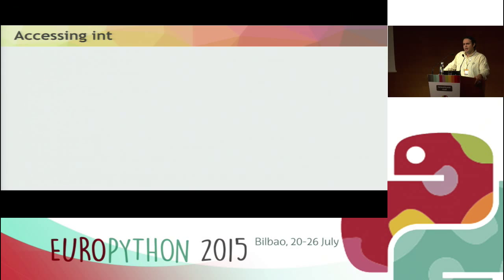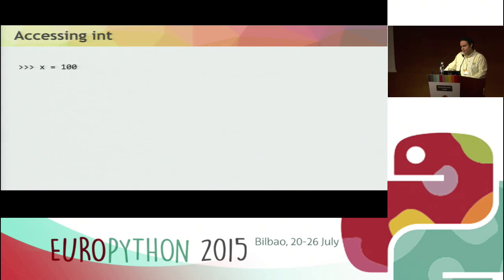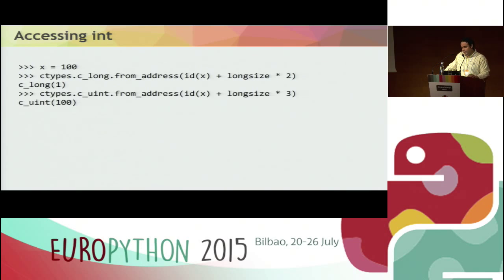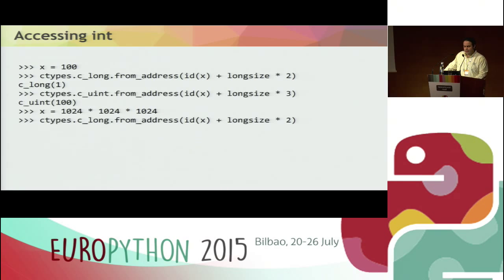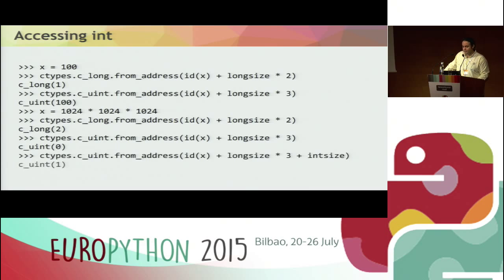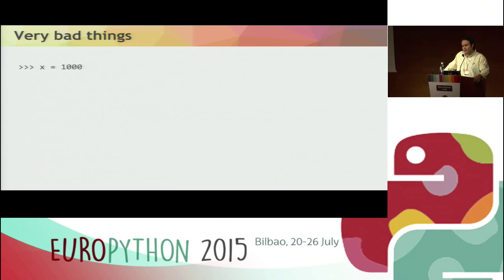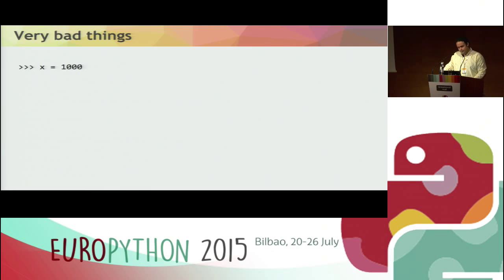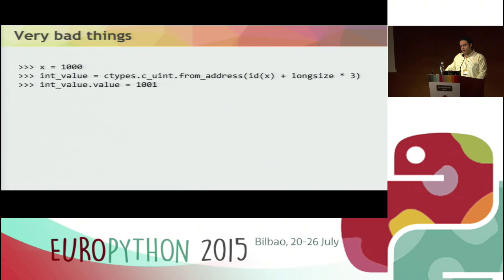I can access the structure of an int with ctypes. I set X to 100; I get ob_size and it's 1, and ob_digit is 100. With 1024, I get ob_size and it's 2, the first ob_digit is 0, and the second ob_digit is 1.